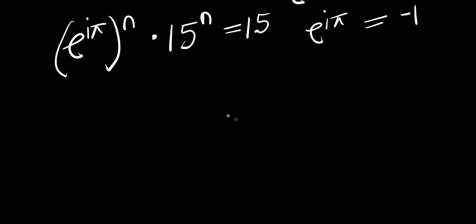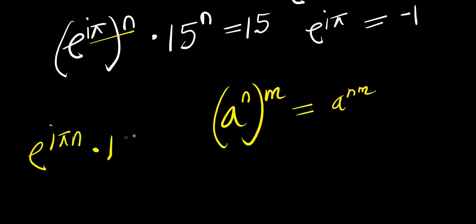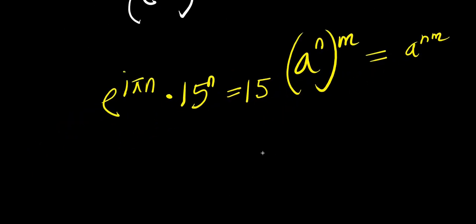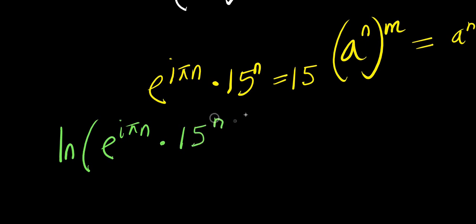Now if you have a to the power of m raised to the power of n, this equals a to the power of n times m. So multiplying this out, you are going to have e to the power of i times pi times n, times 15 to the power of n equals 15. At this point, what we can do is apply the natural log: natural log of e to the power of i times pi times n, times 15 to the power of n equals natural log of 15.